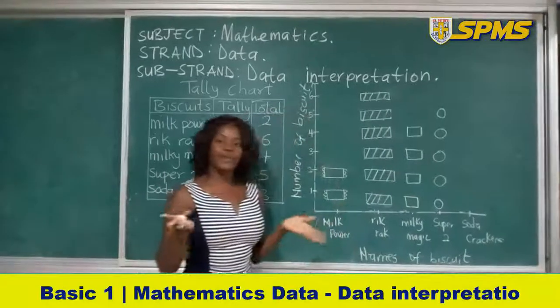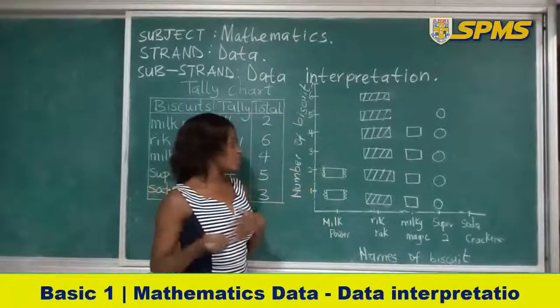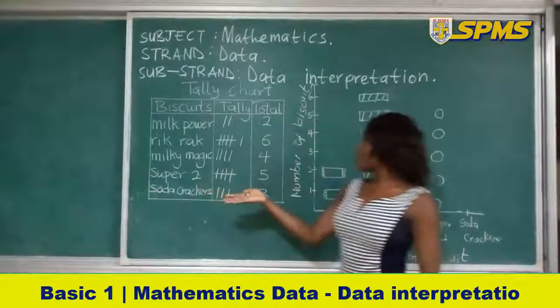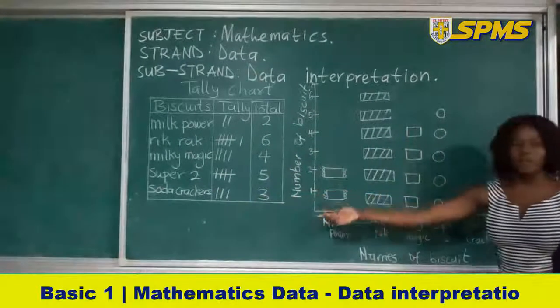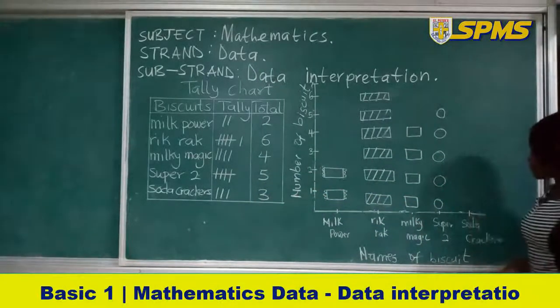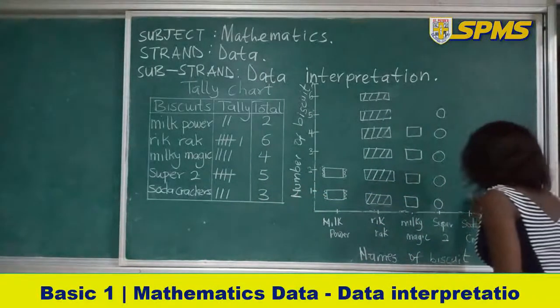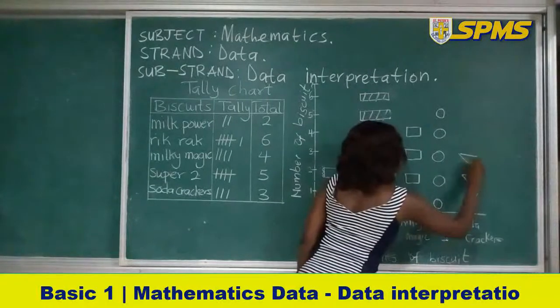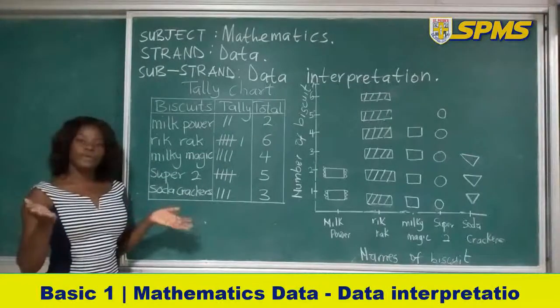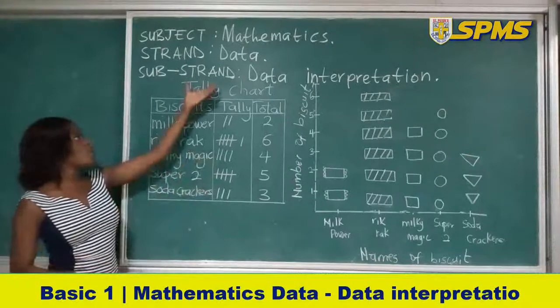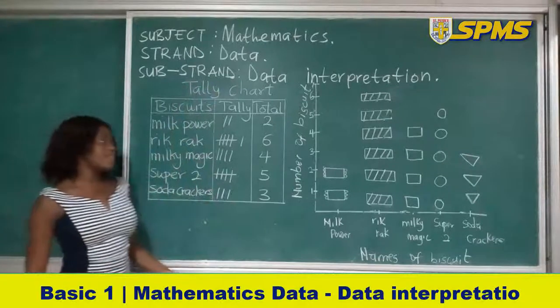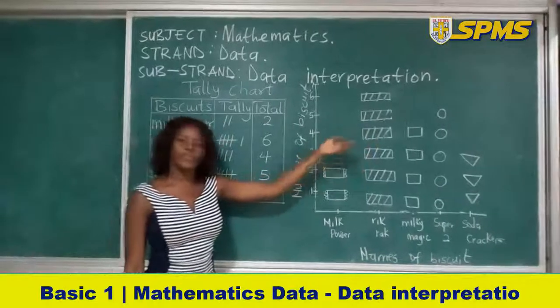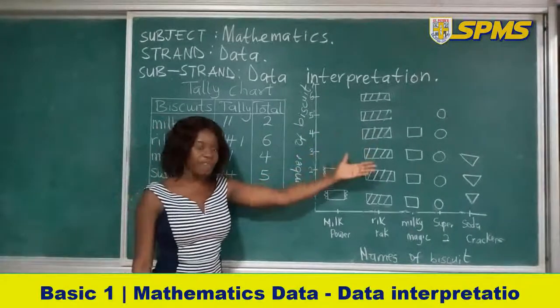Then now to our last biscuit, which is what? Solder Cracker. So we are going to represent that here. Let's go. Solder Cracker is like this. So children, the tally chart over here is being represented here in a form of pictures, pictorial graph. So we call this pictorial graph or picture graph.